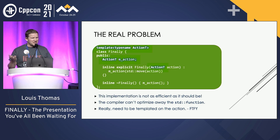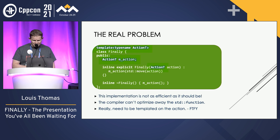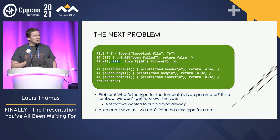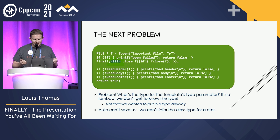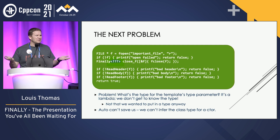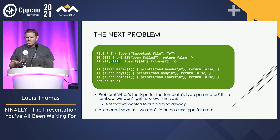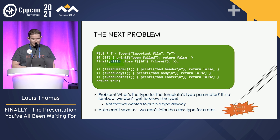Now we have a template on the action — we don't know what the heck that type is, but we're holding one of those, and it's much more efficient now. But when we go back to using it, we get into the problem: what the heck is the type we're supposed to put in those angle brackets? We didn't really want to figure that out. And unfortunately, auto can't save us because we can't infer the class type for a constructor.